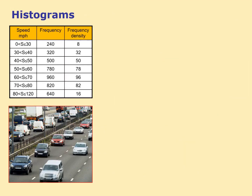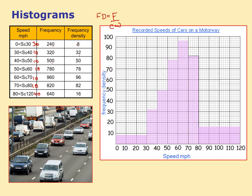The third type — a histogram — is used when intervals are not going up by the same amount each time. For example, this one goes from 0 to 30, a class width of 30, whereas 30 to 40 has a class width of 10, and the very last one has a class width of 40. For a histogram, frequency density has a formula: frequency divided by class width. So in the first interval: 240 divided by 30 = 8; 320 divided by 10 = 32; 500 divided by 10 = 50. You divide by different amounts determined by the class width. When you draw it, you must draw frequency density up the side — that's a very common mistake.